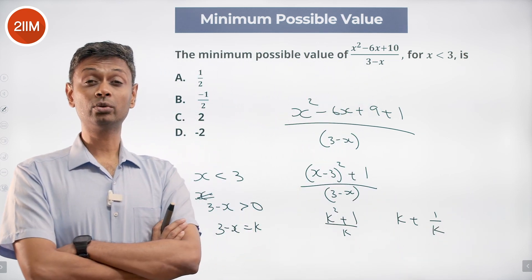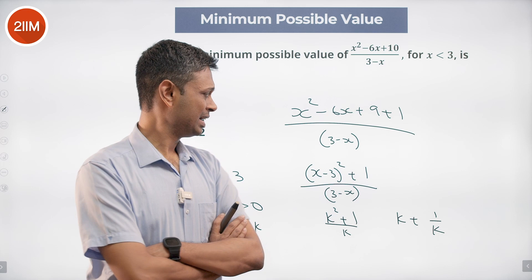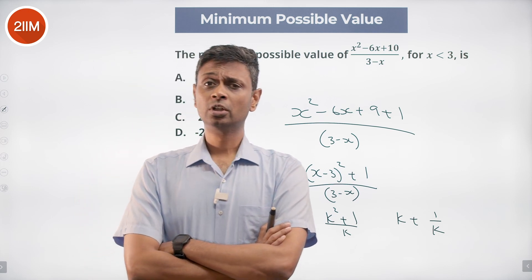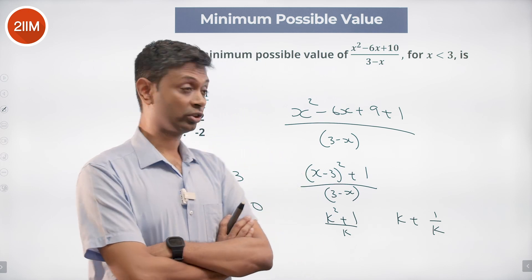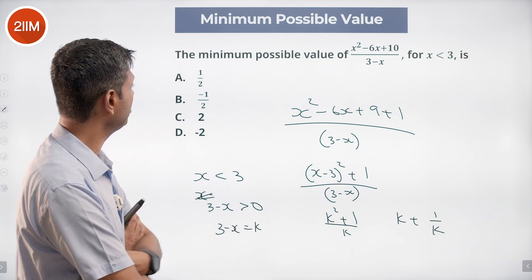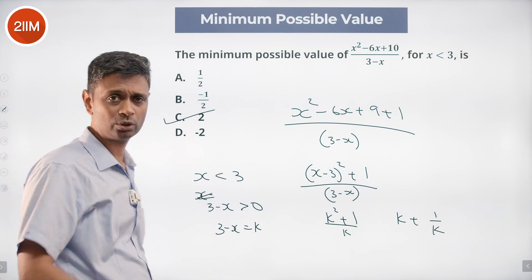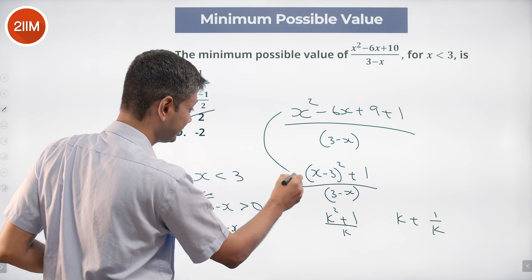k + 1/k is either greater than or equal to 2 or less than or equal to -2. It cannot be less than or equal to -2 because we know x is less than 3, so k is positive. Therefore, the minimum possible value is 2.